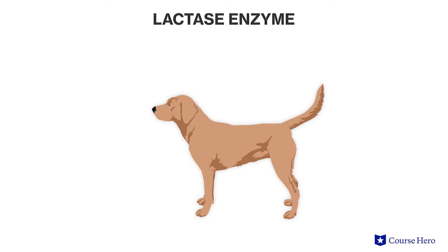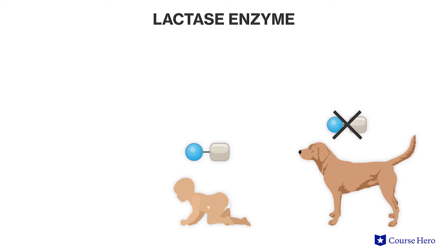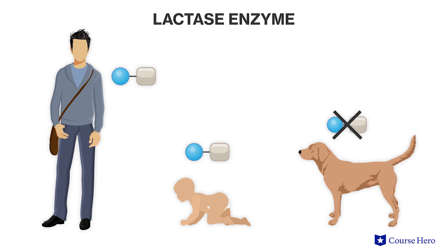Sometimes, however, new traits that arise from genetic mutations are beneficial. For example, most mammals lose the ability to produce lactase, the enzyme that breaks down the milk sugar lactose, shortly after being weaned. Many humans, however, have a mutation that causes the production of lactase to persist throughout their lifetime. This lactase production allows humans to drink milk from infancy to adulthood, which provides them with nutrients such as vitamin A as well as healthy fats and proteins.